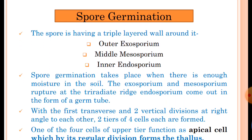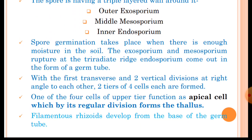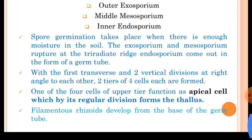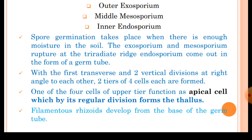Now spore germination. The spore has a triple-layered wall: outer exosporium, middle mesosporium, and inner endosporium. Spore germination takes place when there is enough moisture in the soil. The exosporium and mesosporium rupture at the triradiate mark, and from this the endosporium comes out as a germ tube. With the first transverse and two vertical divisions at right angles to each other, two tiers of four cells each are formed. One of the four cells of the upper tier functions as the apical cell, which by regular division forms the thallus. Filamentous rhizoids develop from the base of the germ tube.